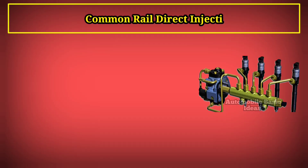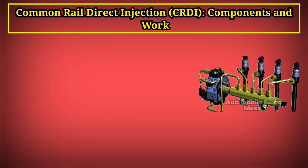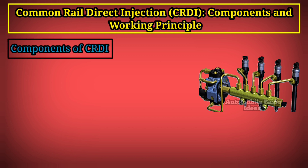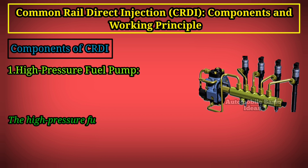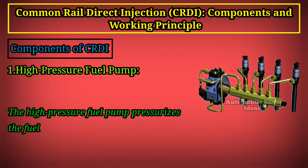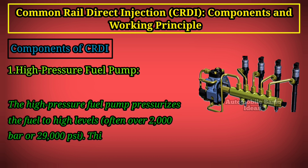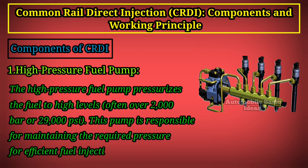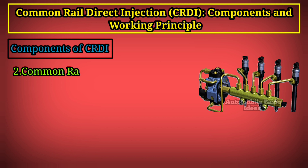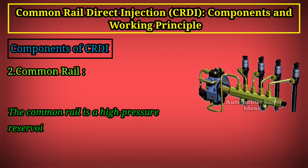Common rail direct injection (CRDI): components and working principle. Component 1 — High Pressure Fuel Pump: the high pressure fuel pump pressurizes the fuel to high levels, often over 2,000 bars or 29,000 PSI. This pump is responsible for maintaining the required pressure for efficient fuel injection.